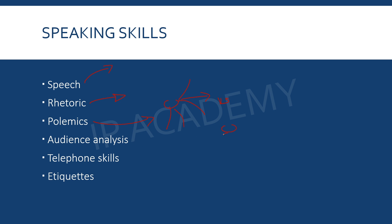Audience analysis means that whenever you are giving a speech, there will be different audiences. If you observe that many people have closed body language, you can understand that nobody is interested in what you are saying — as we also studied in body language. So you need to keep analyzing and improvising, which basically means adapting yourself to what is happening.